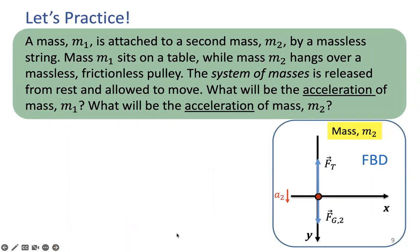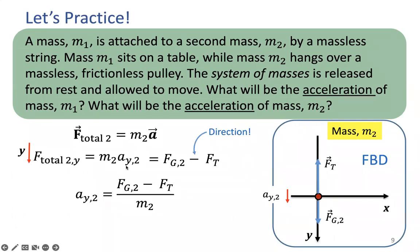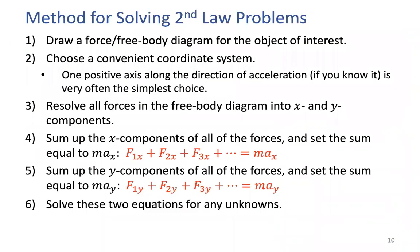For mass m2, we only need to consider the y direction since it's not moving along x. Applying F equals ma: acceleration is downward, force of gravity on mass 2 is downward, but tension force is upward — hence that negative sign. From this you can find the unknown acceleration. Any scenario you have in hand, if you follow these steps and apply Newton's second law, that's all you have to do in any given problem.